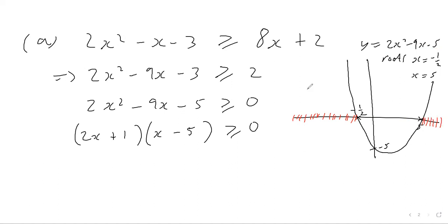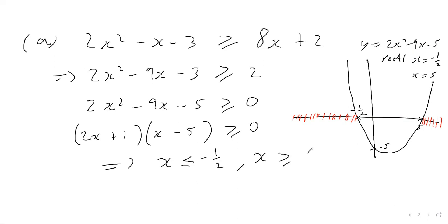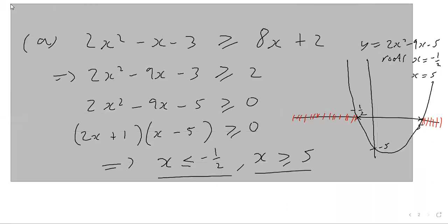From the sketch of the graph we can see the solution is: x is less than or equal to negative one half, and also x is greater than or equal to 5. We keep the 'equal to' part because the original inequality uses 'greater than or equal to.' That would be our acceptable solution for part a.